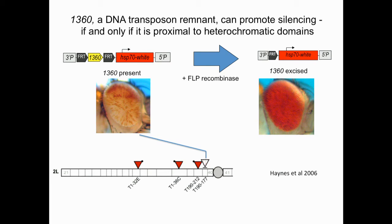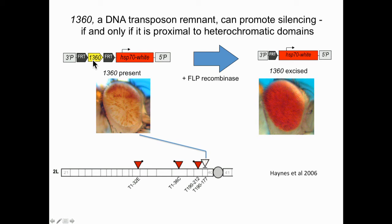Our interest in looking at repeats as targets for silencing started with element 1360, a transposable element remnant which we identified in the fourth chromosome as a likely target for silencing. We set up a P element and put it back into the genome, hoping to create instant heterochromatin anywhere. That turns out not to be the case. If you insert this out in the arms, you get full red expression of the reporter. But if it's inserted close to the pericentric heterochromatin, you can get a very significant silencing, a PEV phenotype. This phenotype is dependent not only on location, but also on the target — if we flip out the 1360 using Fritz sites, we revert to a much higher level of expression.